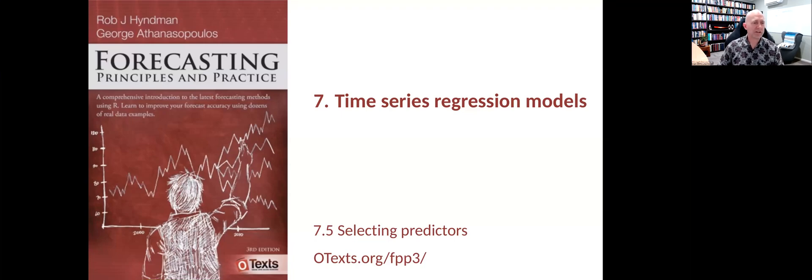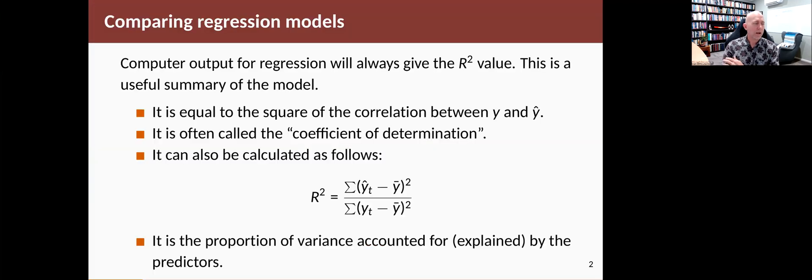It's common in regression modeling to have to select a subset of the available predictors. Computer output will give you various tools to help you do that. The most common thing you see in output for regression is the R² value, which is a useful summary of the model, but it's not actually useful for selecting predictors.